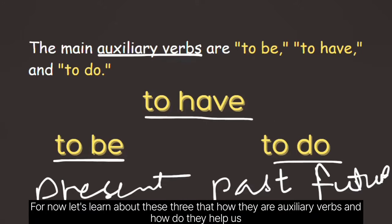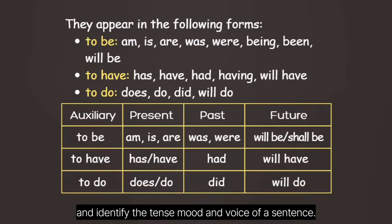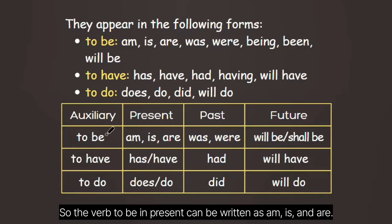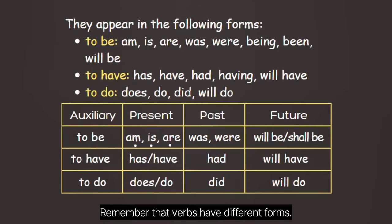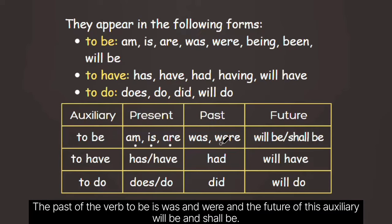For now, let's learn about these three — how they are auxiliary verbs and how they help us identify the tense, mood, and voice of a sentence. As I just told you, these three verbs have their present, past, and future forms. The verb 'to be' in present can be written as 'am', 'is', and 'are'. The past of the verb 'to be' is 'was' and 'were', and the future of this auxiliary will be 'will be' and 'shall be'.